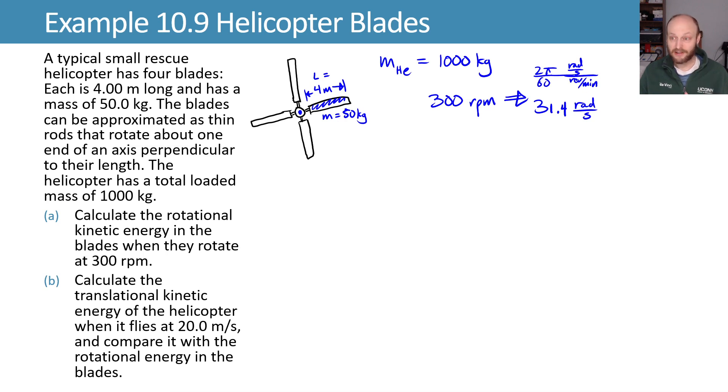Now to calculate the rotational kinetic energy, we'll say our kinetic energy is equal to one half i omega squared. For each blade, we know that the moment of inertia is going to be given by some formula.